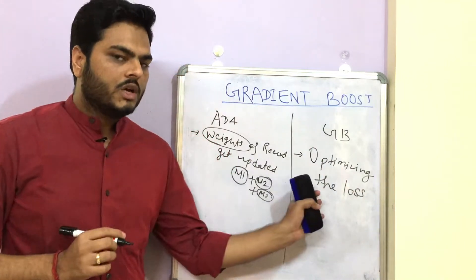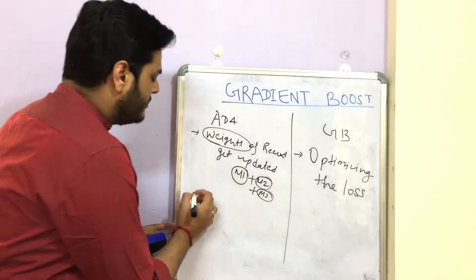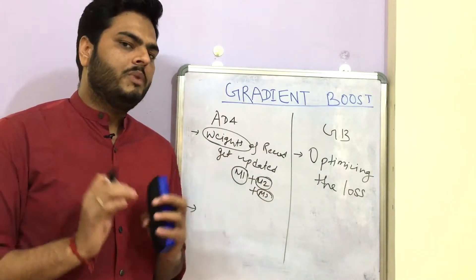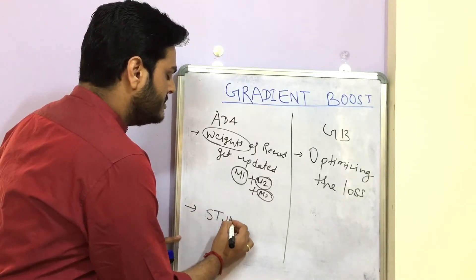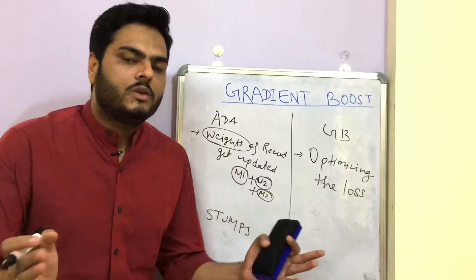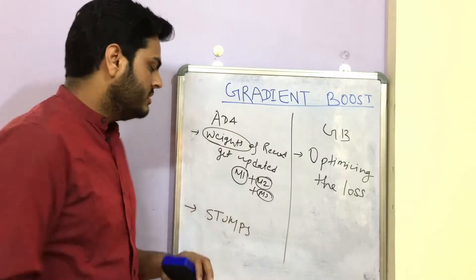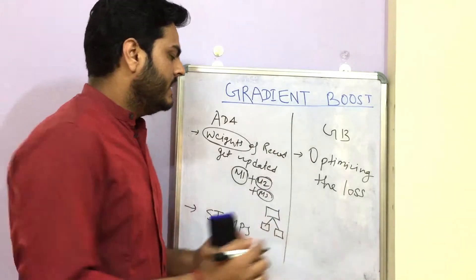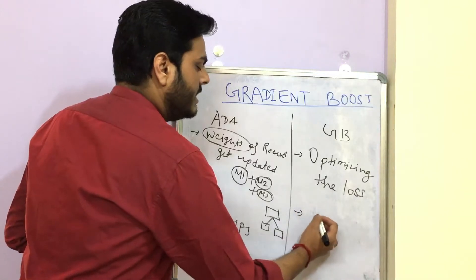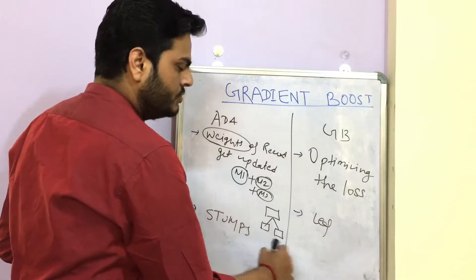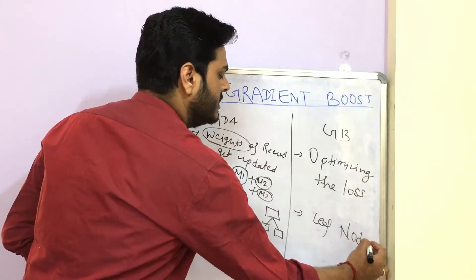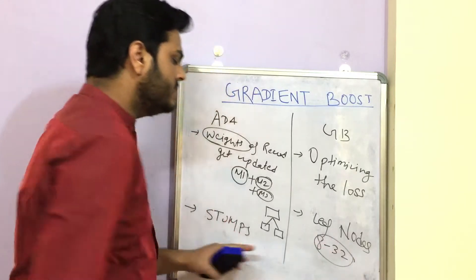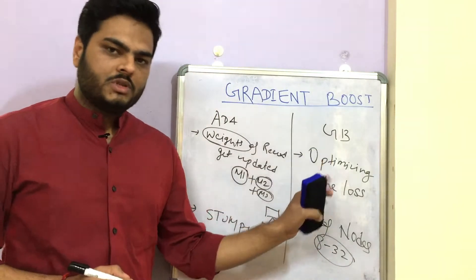Another difference between AdaBoost and gradient boost is the tree size. In AdaBoost, the trees which are built are basically stumps — trees are not grown fully, normally one root and two leaves. Whereas in gradient boost, the leaf nodes normally range between eight to 32, which means trees are bigger in size in gradient boost.